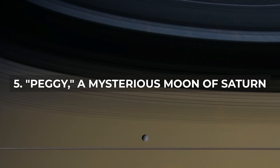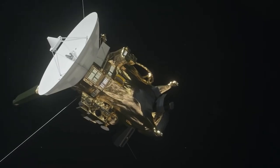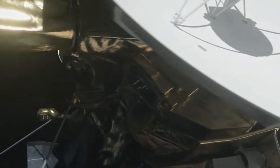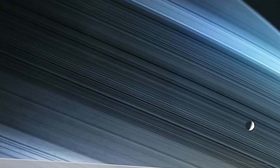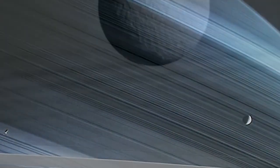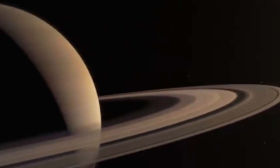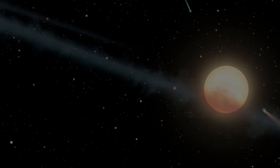Number 5: Peggy, a Mysterious Moon of Saturn. Saturn briefly possessed a tiny, enigmatic moon by the name of Peggy. In 2013, NASA's Cassini took a picture of Saturn's rings and noticed a disruption that astronomers thought was the emergence of a tiny new moon. The discovery provided information on the formation of Saturn's other 67 satellites. In a press release, NASA's Jet Propulsion Lab noted that the object is not likely to grow any larger and may be falling apart. Unknown is Peggy's current situation.